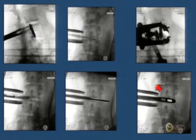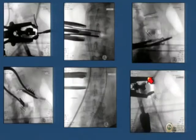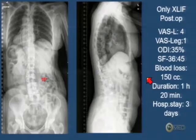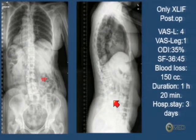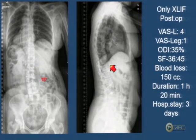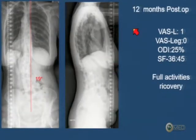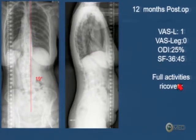I planned to do a three-level XLIF — one hour of operation. This is during surgery. I obtained these results. The sagittal balance was quite the same as before, but we corrected the deformity in the coronal plane. One year later, she has perfect balance in the coronal and sagittal planes, and she recovered full activity very soon.